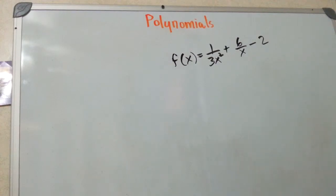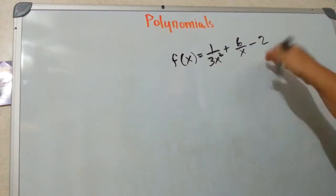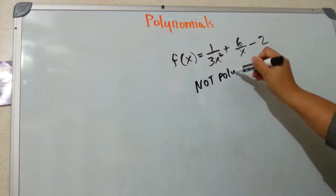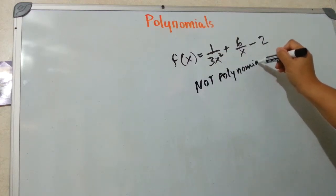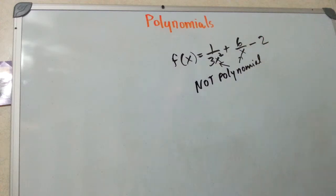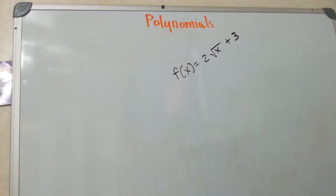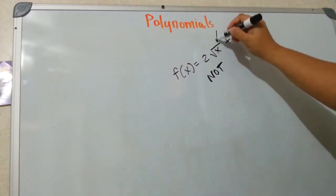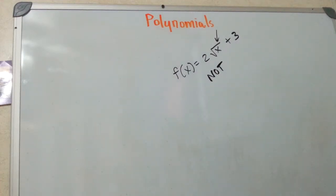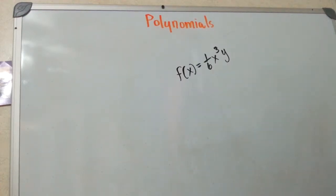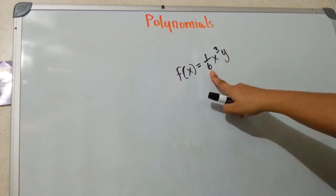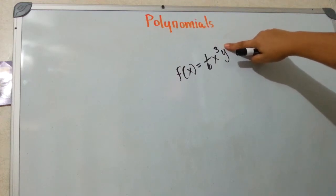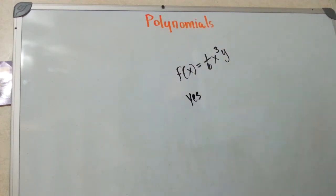Looking at this example, this one is not a polynomial. And this one is also not a polynomial because we have a variable under a radical sign. Looking at this next example — is this a polynomial? Yes, because the coefficient is real and the exponents are whole numbers. So yes, it's a polynomial.